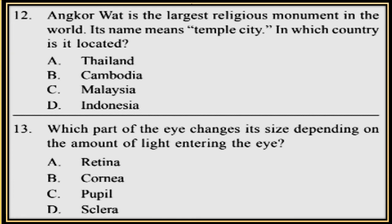Question 13. Which part of the eye changes its size depending on the amount of light entering the eye? A. Retina, B. Cornea, C. Pupil, D. Sclera.